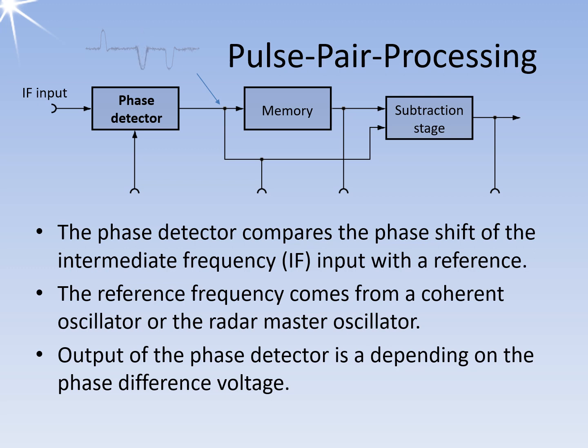In the phase detector, the phase shift of the echo signal is compared with the phase of a reference frequency. Coherent-on-receive radars use a coherent oscillator, called COHO, to provide the reference, while fully coherent radars derive it from the master oscillator.